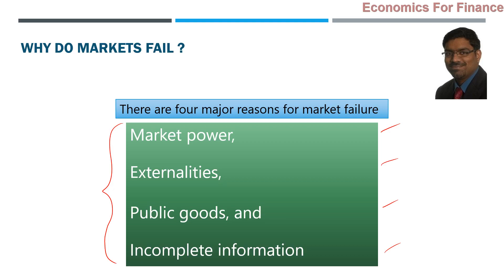Who identified all this? Many economists throughout many decades have observed why markets fail, and each came out with their own thoughts. What we are learning here is a compilation of many economists' thinking over almost a century of research. The broad outcome is four reasons: market power, externalities, failure of markets to provide public goods — public goods itself is not bad, but markets failing to provide them is a failure — and incomplete information, which prevails in the market and results in market failure.